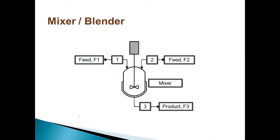Here from the figure shows the mixing process flow sheet in which two feed streams F1 and F2 are entering into the mixer or blender and after mixing or blending, we get the product as F3.